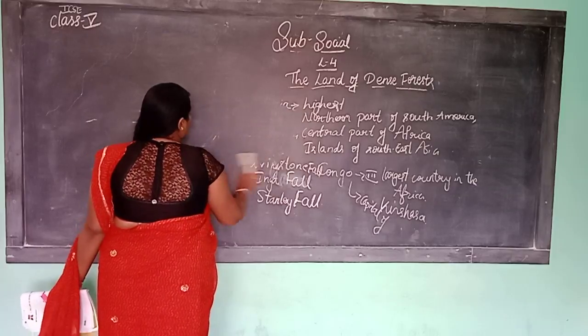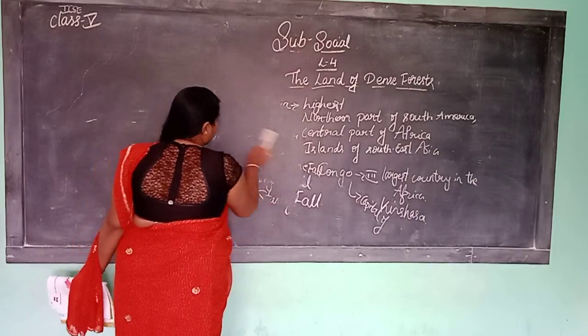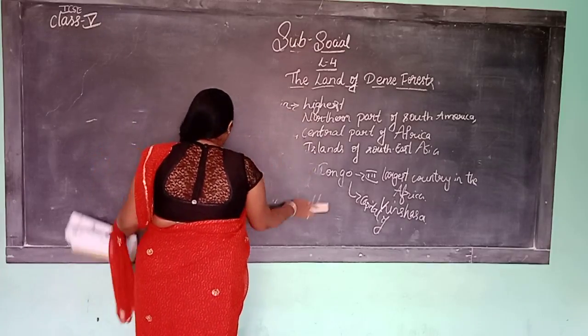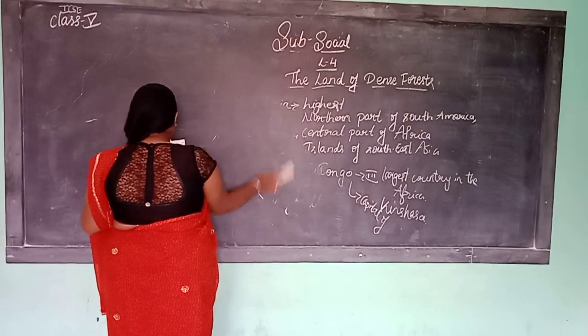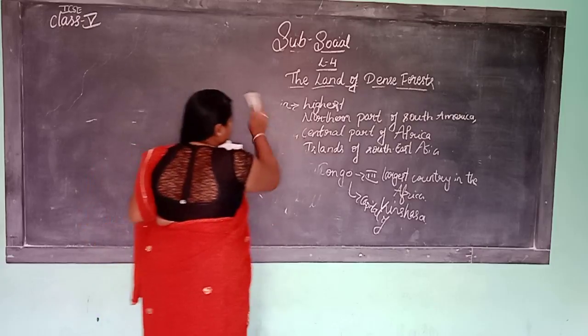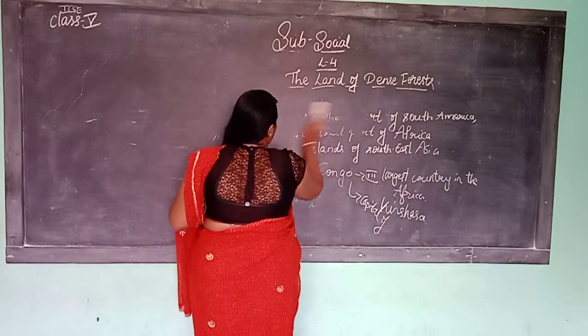The trees in the forest include mahogany, ebony, and rosewoods.